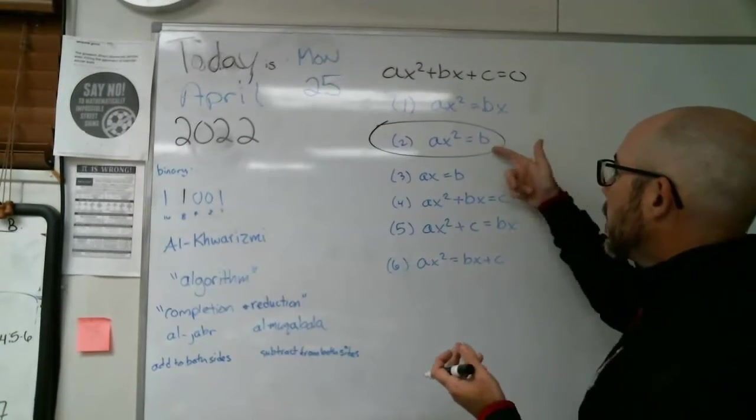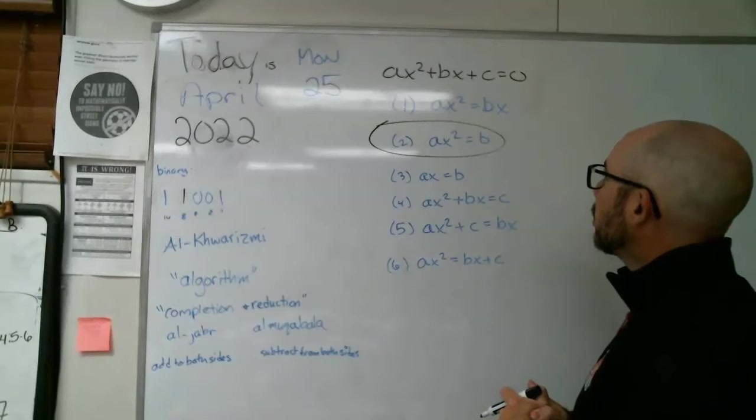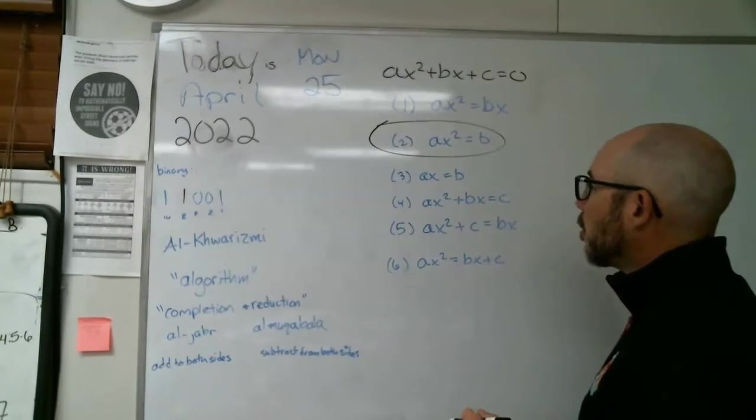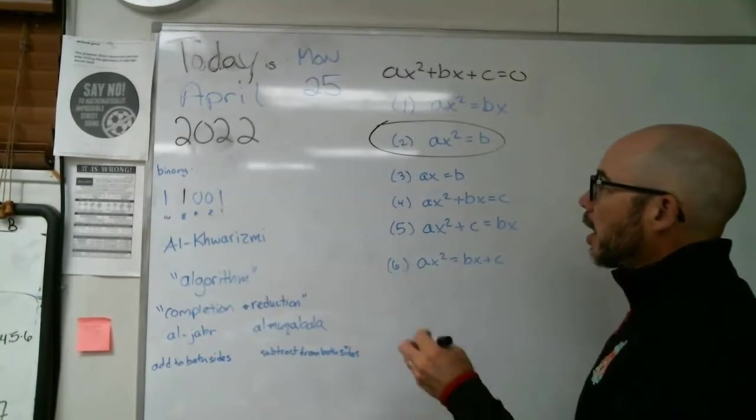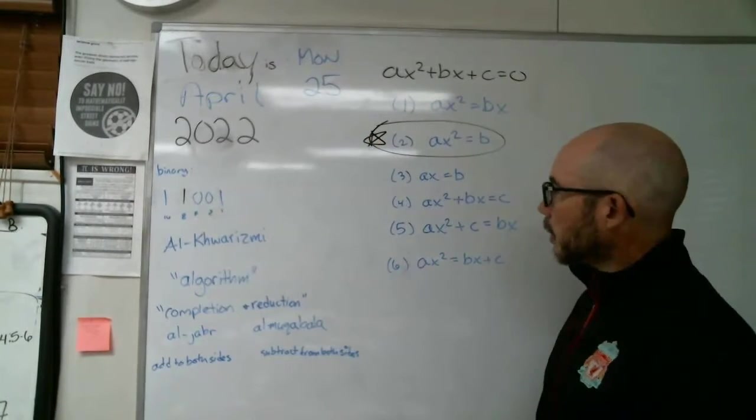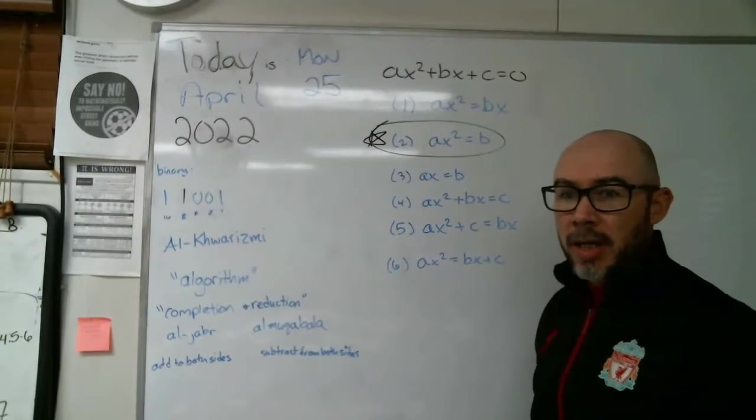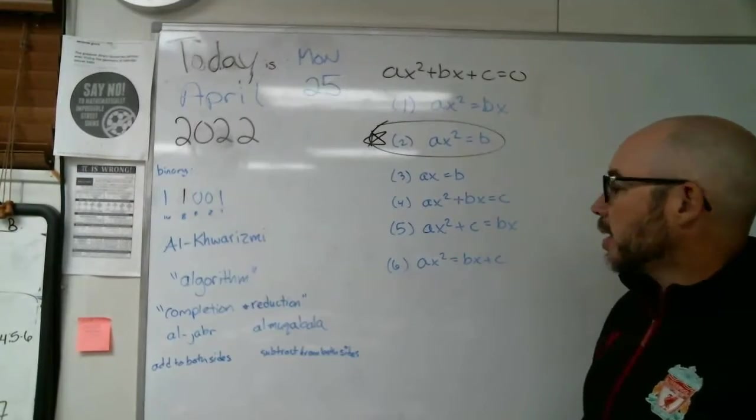x squared equals 40. Yeah, I think we're going to be looking at case number two. There's no linear term in what we're doing today. So yeah, that's the winner right there is case number two. Okay. There's your background. Now I'm going to clear the board and we're going to get to some of the business.